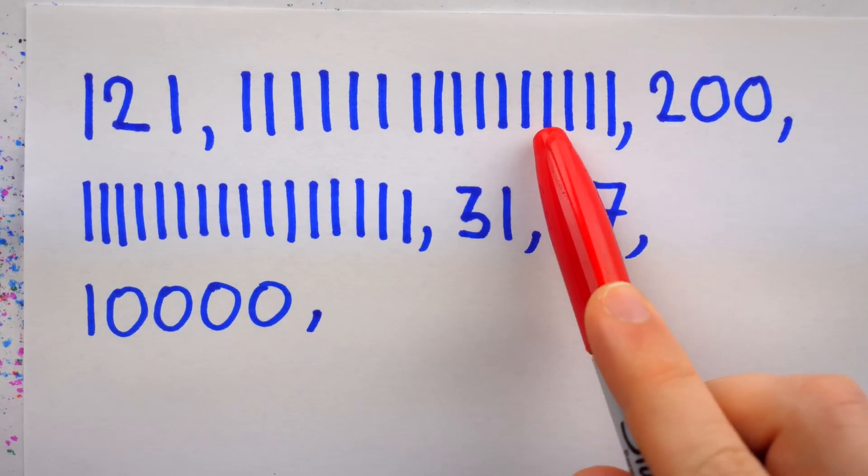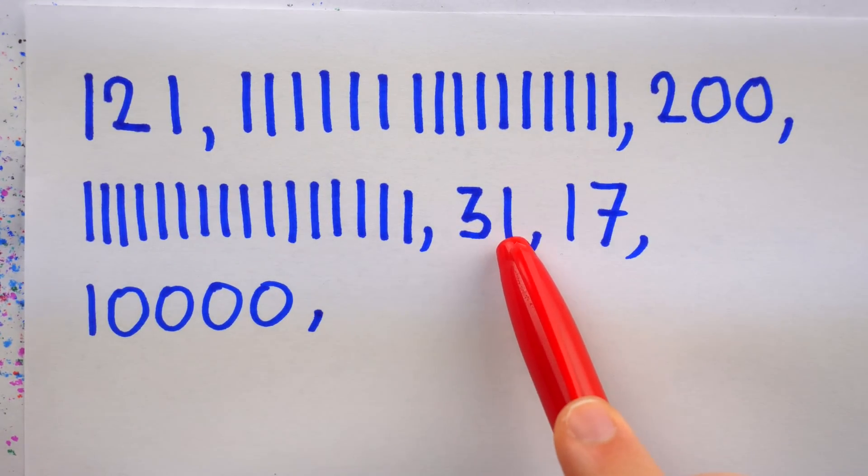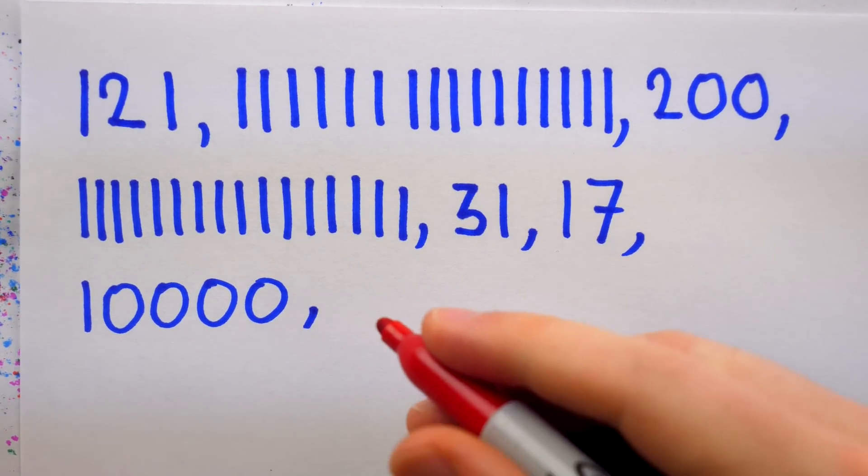Here are the first 1, 2, 3, 4, 5, 6, 7 terms of a peculiar sequence.